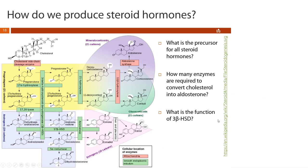So how do we produce steroid hormones? This is a figure that will be provided on your next exam — you don't need to memorize it, just know how to utilize it and answer questions based on it. For example: what is the precursor for all steroid hormones? All the molecules on this graphic are steroid hormones, and they all start with cholesterol — you can trace every one of these molecules back to cholesterol.